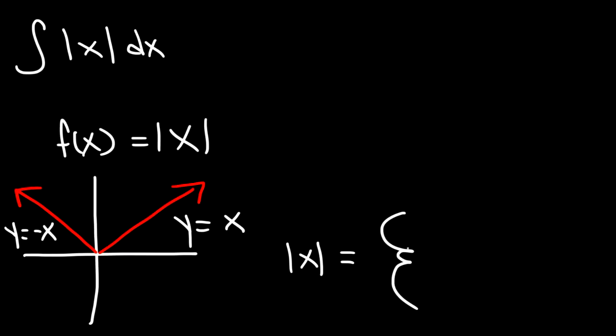The absolute value of x equals x when x is greater than or equal to 0, and it equals negative x when x is less than 0.